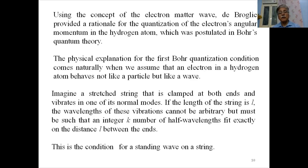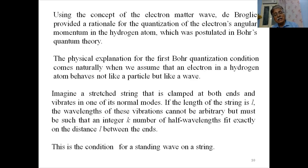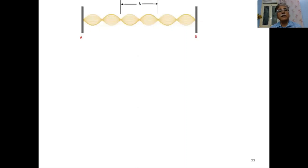Rather, the wavelength must be such that an integer number k of half-wavelengths fits exactly on the distance L between the ends. This is the condition for a standing wave on a string. The frequency of such standing waves is given by ν = (p/2L)√(T/m), where T is the tension and m is the mass per unit length. Different numbers of loops fit into the length of the string, and the numbers are such that the length contains an odd number of λ/2.